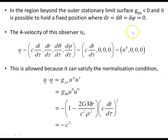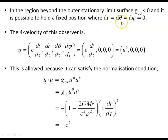In the region beyond the outer stationary limit surface, the time component of the metric is negative, and as a result it is possible to hold a fixed position. We can set dr, d-theta, and d-phi to zero for a stationary observer observing the black hole in a spatially fixed position.